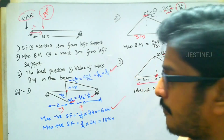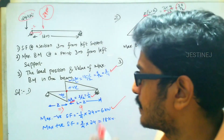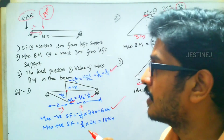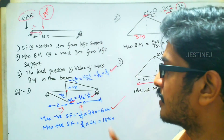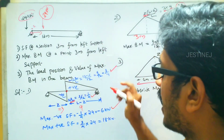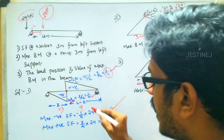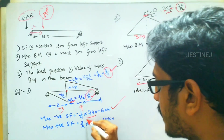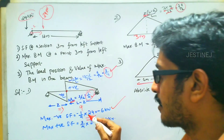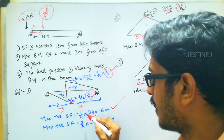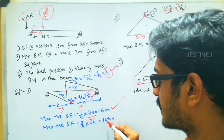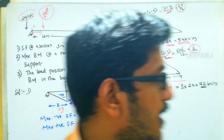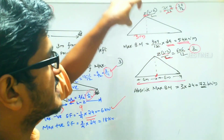That gives 3 by 4. This is the case for 1 unit load. To find the values for the 24 kilo Newton load, multiply: 3 by 4 multiplied by 24, and 1 by 4 multiplied by 24. So the maximum negative shear force value is minus 6 kilo Newton, and the maximum positive shear force value is 18 kilo Newton.